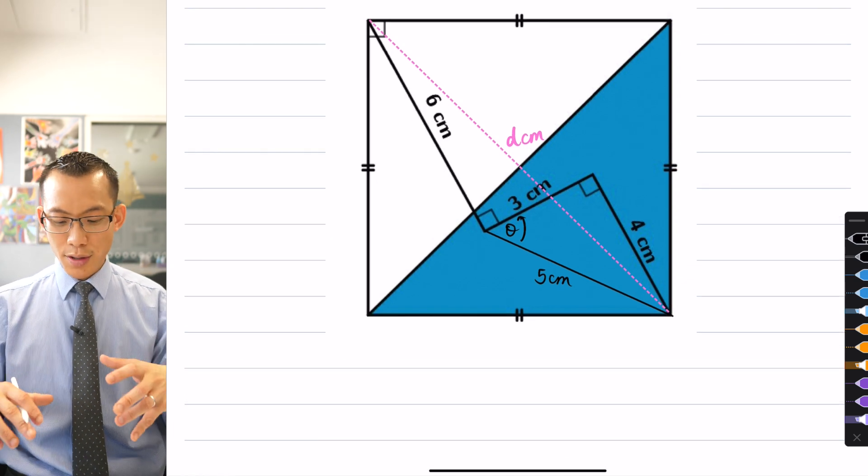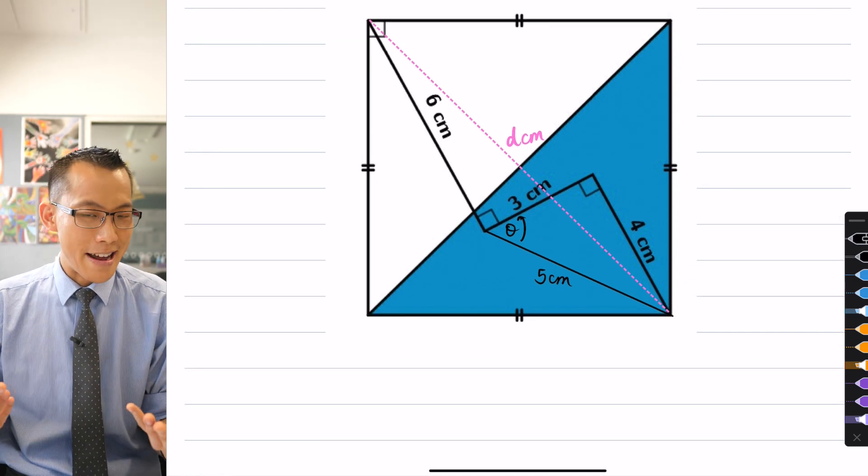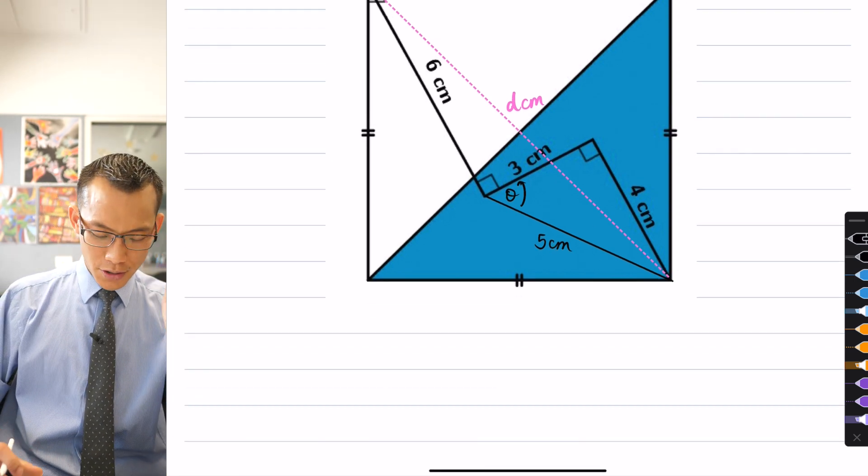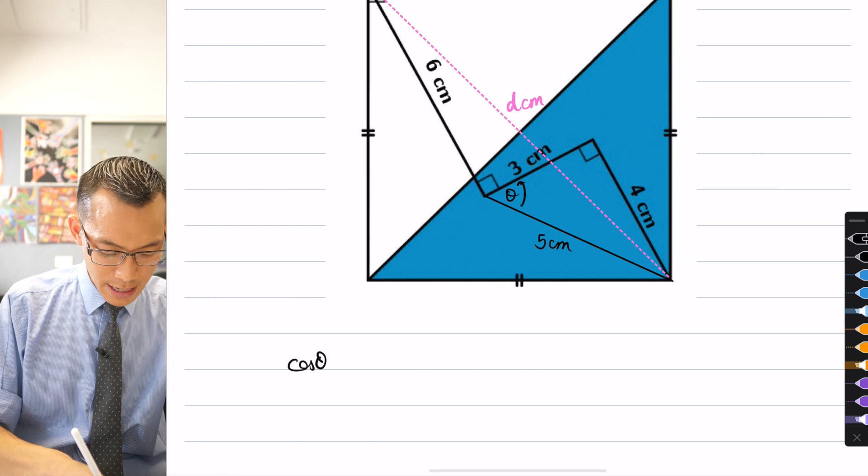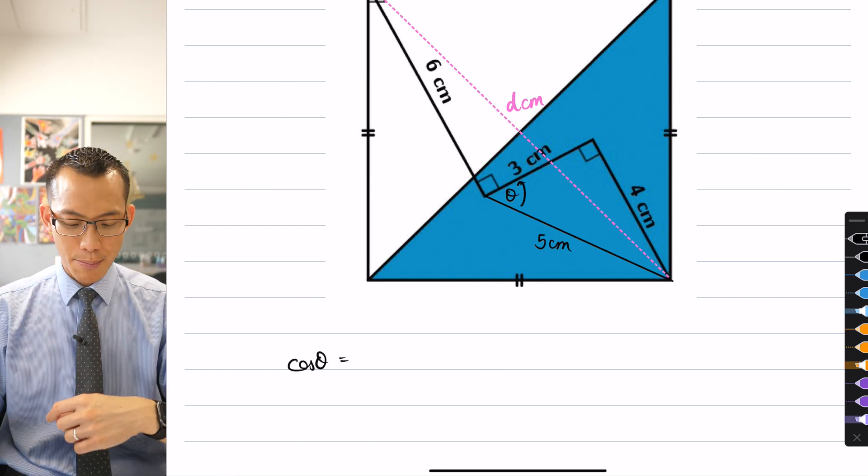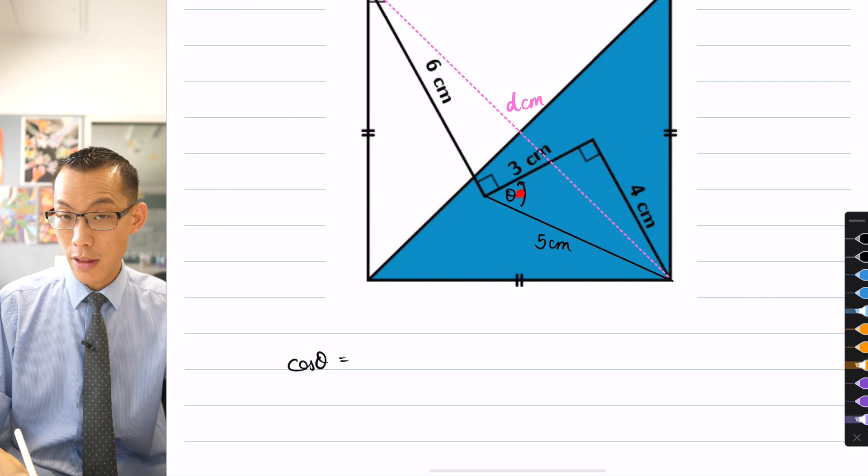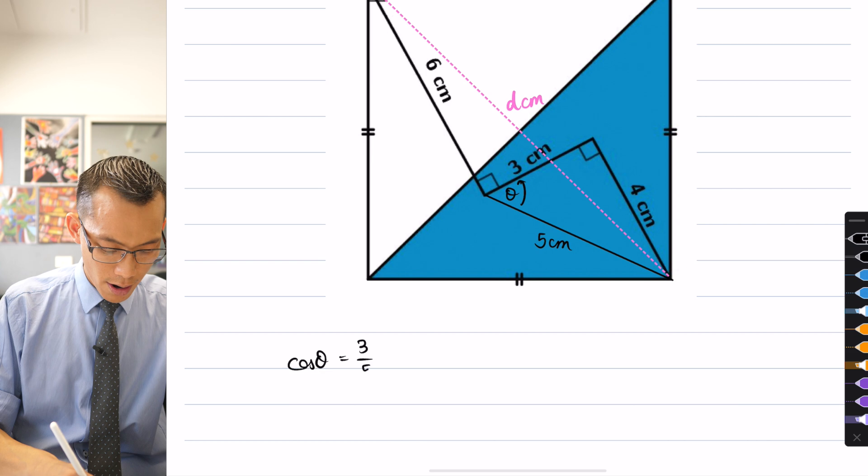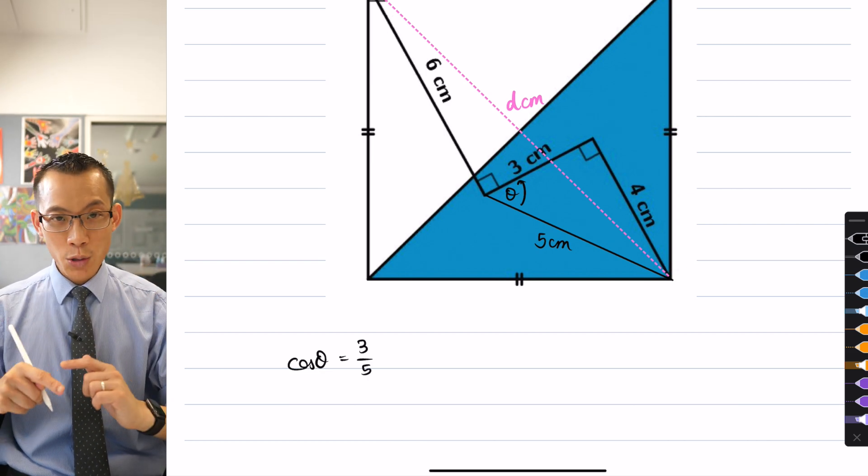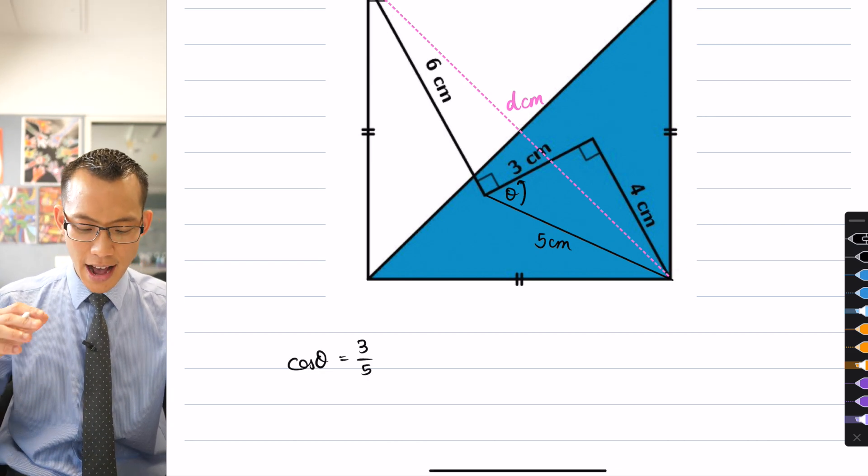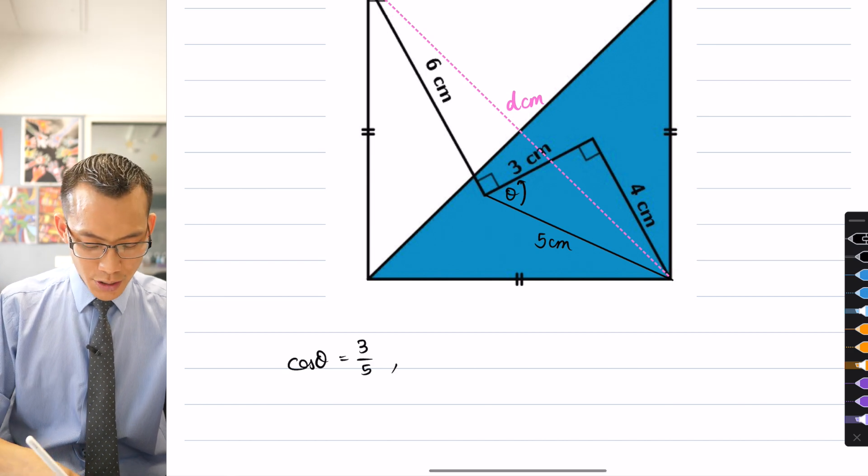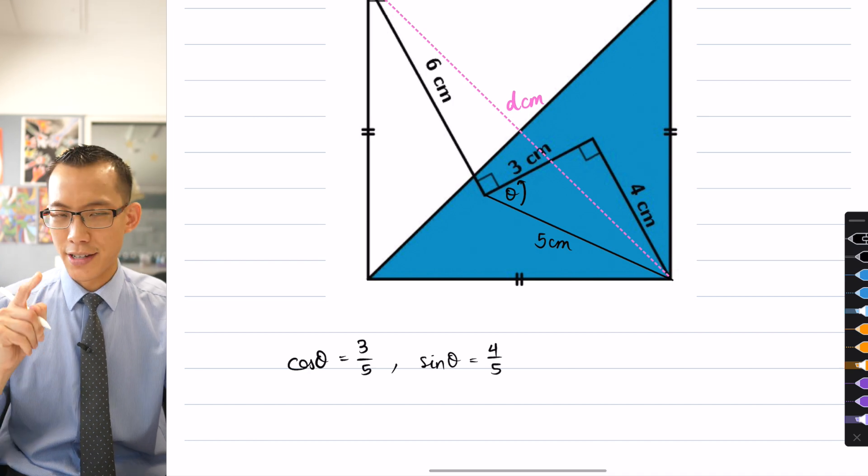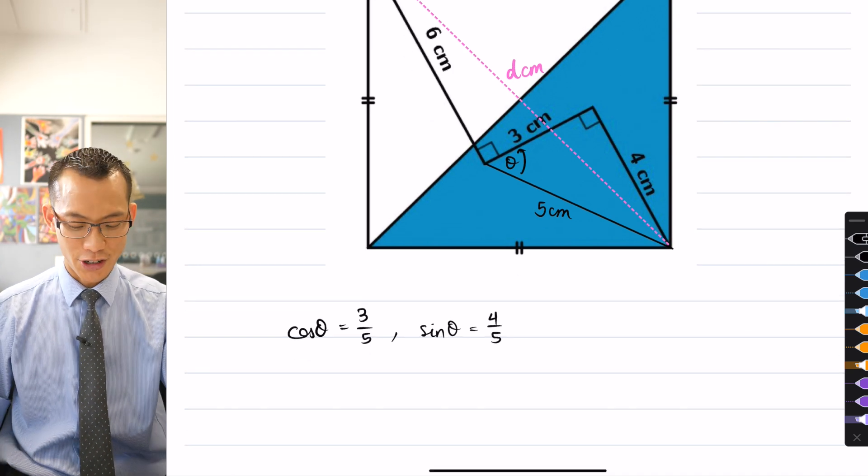What I'm going to do is use the fact that this theta sits in a right angled triangle. It's the three, four, five triangle that I noticed before. So I'm going to note down that in this triangle, I can say cos θ is adjacent on hypotenuse, which in this case is three over five. I also am going to need later on the sine of this angle, so I might as well note it down. It's going to be four over five.